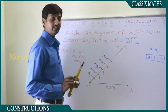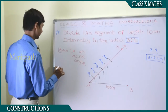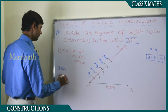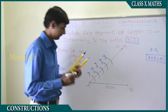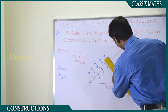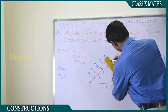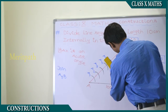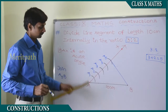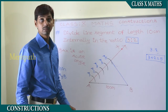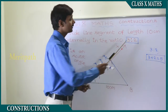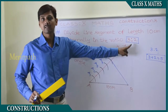Now let's join A5 and B. The line segment A5B is drawn, and we have a figure here. We know there are 5 equal parts, and in general this divides in the ratio of 3 to 2.